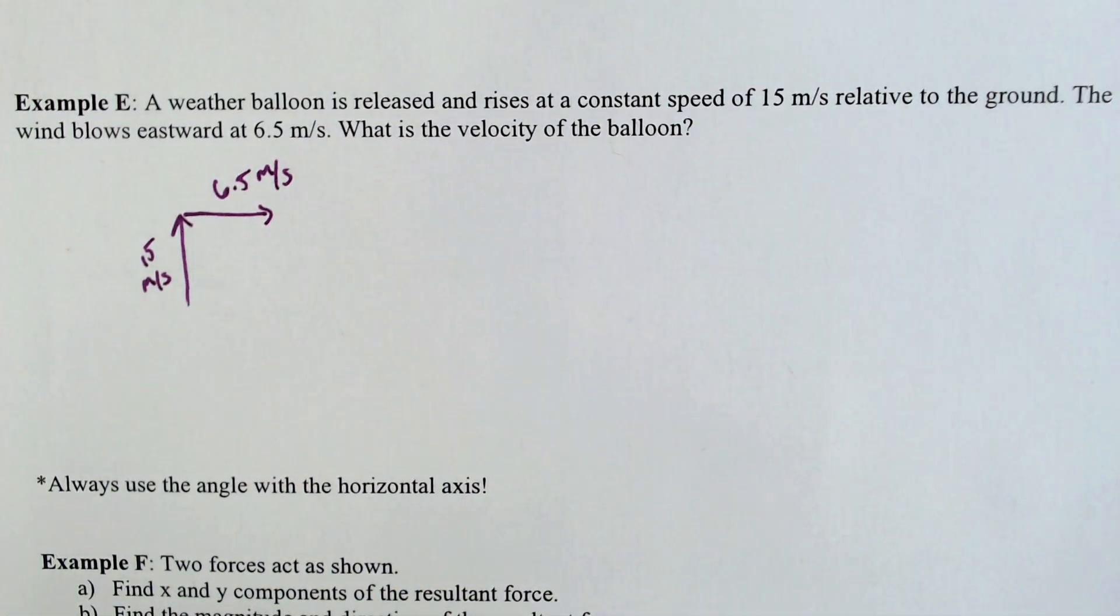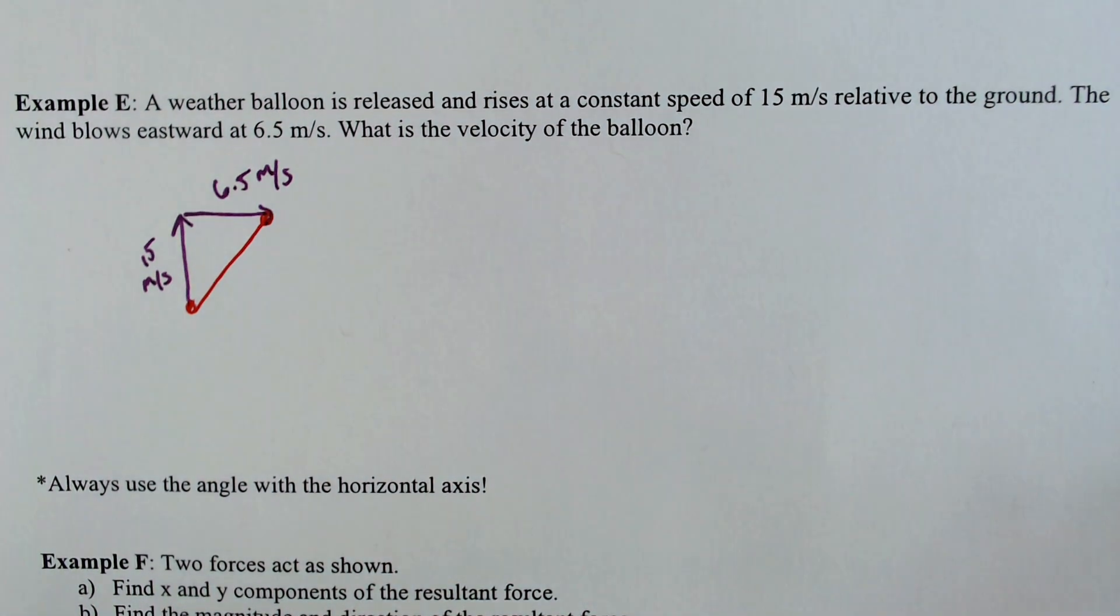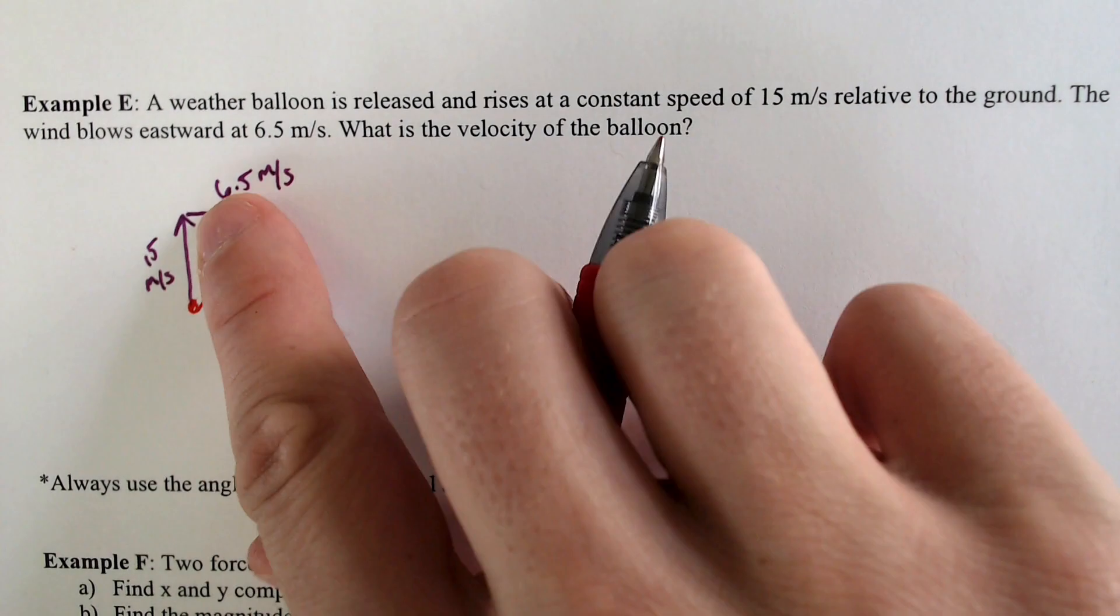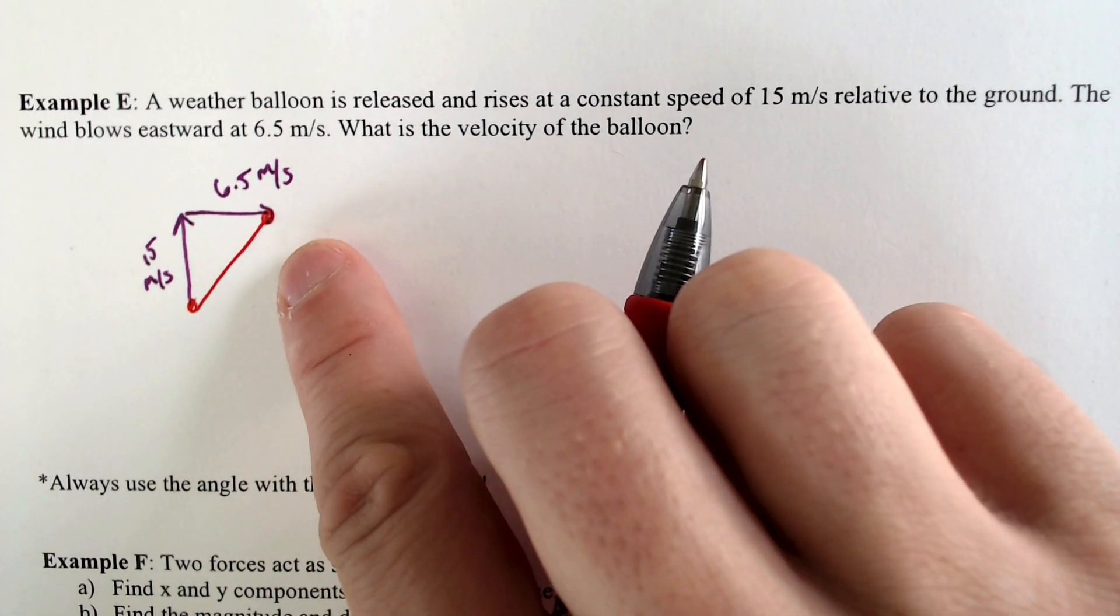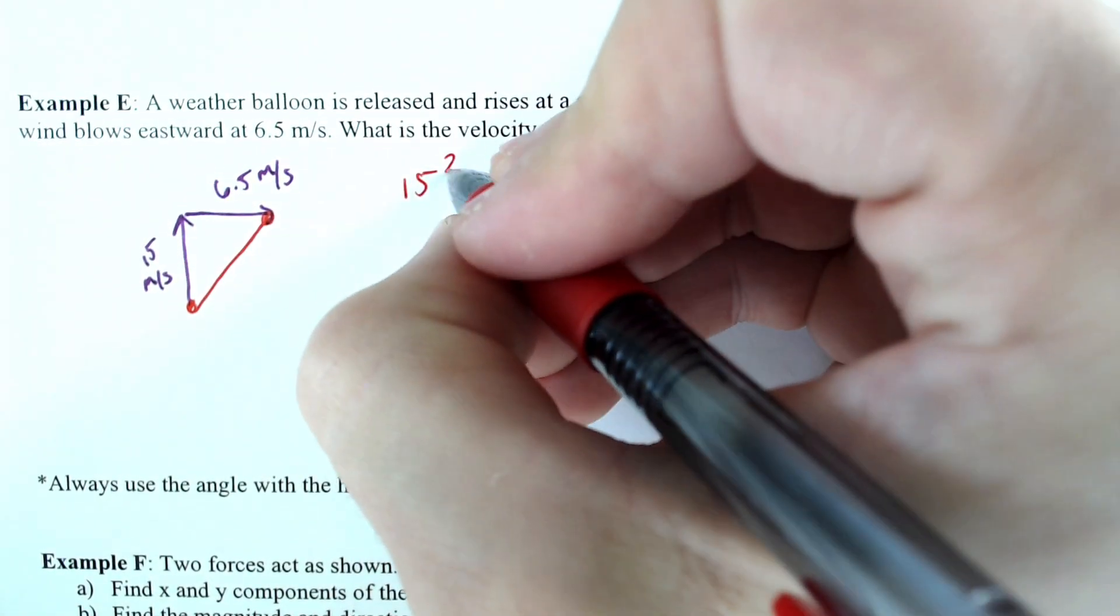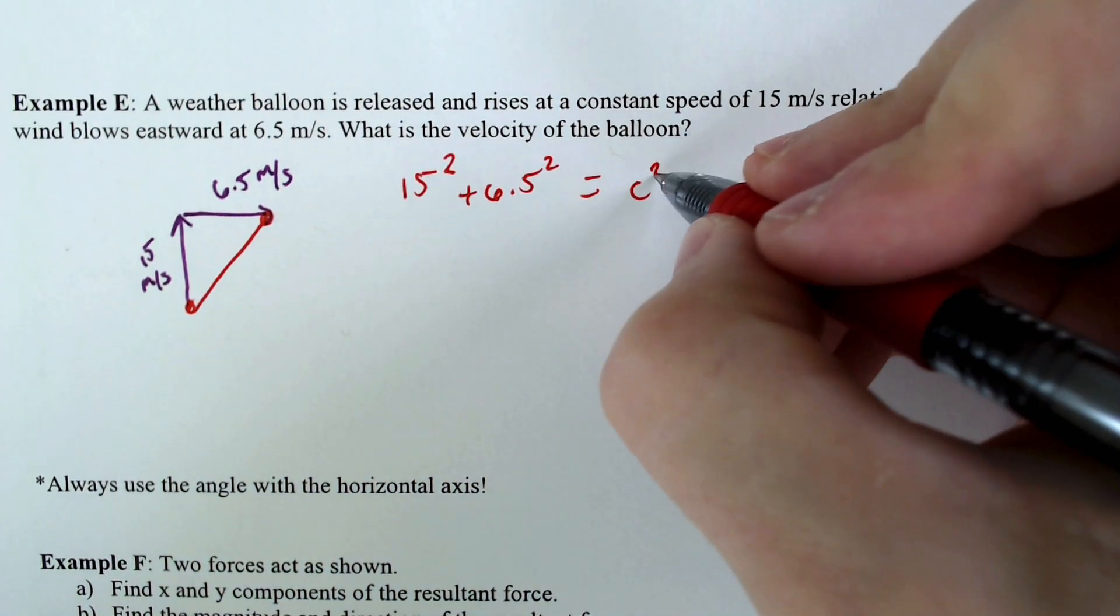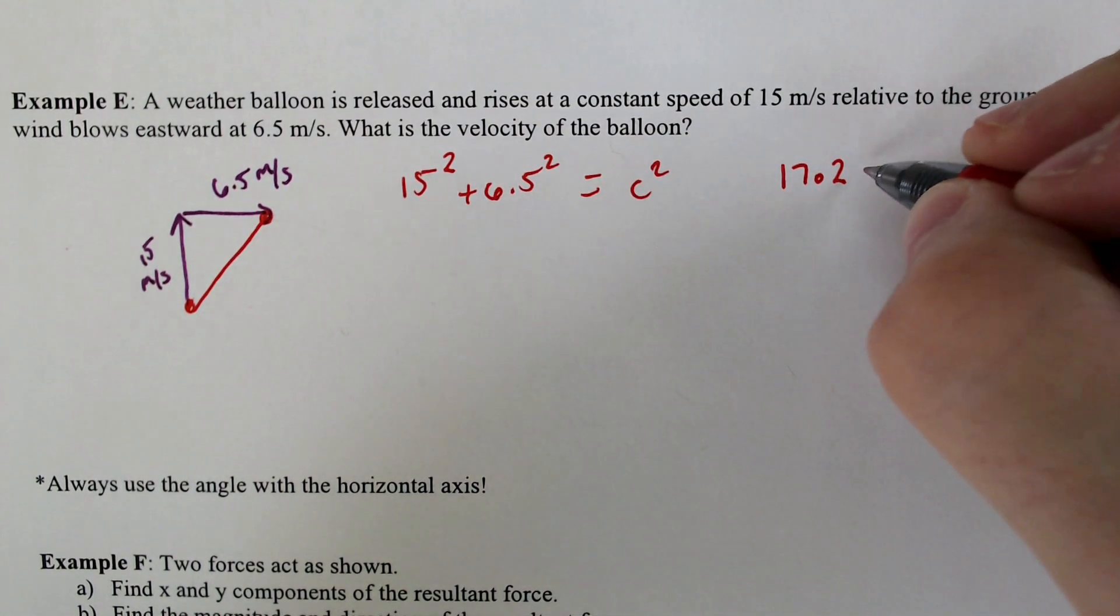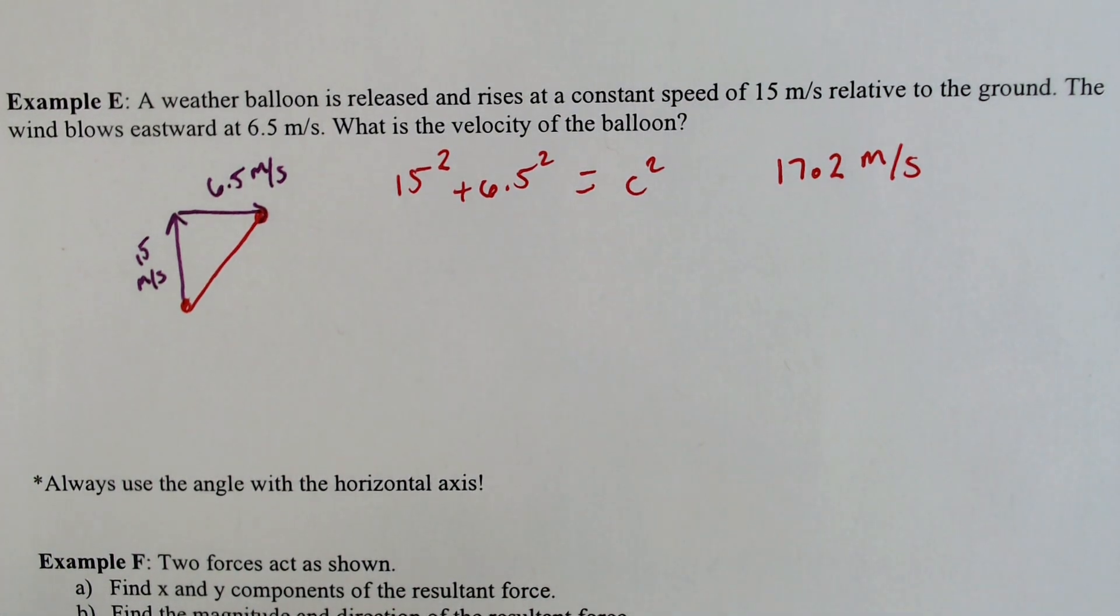And we need the resultant vector. We need to find out how quick this balloon is moving combined. And it's not just going to be as simple as adding them together because we're not really going up and then over separately. We are going this kind of diagonal distance like so. So with that in mind, we would need to use the Pythagorean theorem. 15 squared plus 6.5 squared would equal c squared or the resultant velocity squared. And if you do the math for that, you will get 17.2 meters per second by adding the 225 and whatever 6.5 squared is and square rooting.